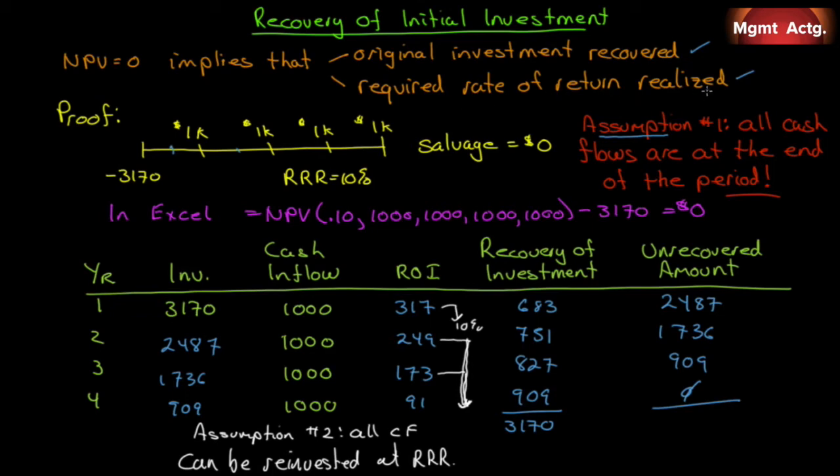I have shown you that a net present value of zero implies two things: it implies that our original investment is recovered and that our required rate of return is realized. So anything greater than zero is an automatic accept. Anything less than zero is an automatic reject. I've also shown you the two assumptions that underlie net present value. Assumption number one, all cash flows are at the end of the period. And number two, all cash flows can be reinvested at the same rate of return.